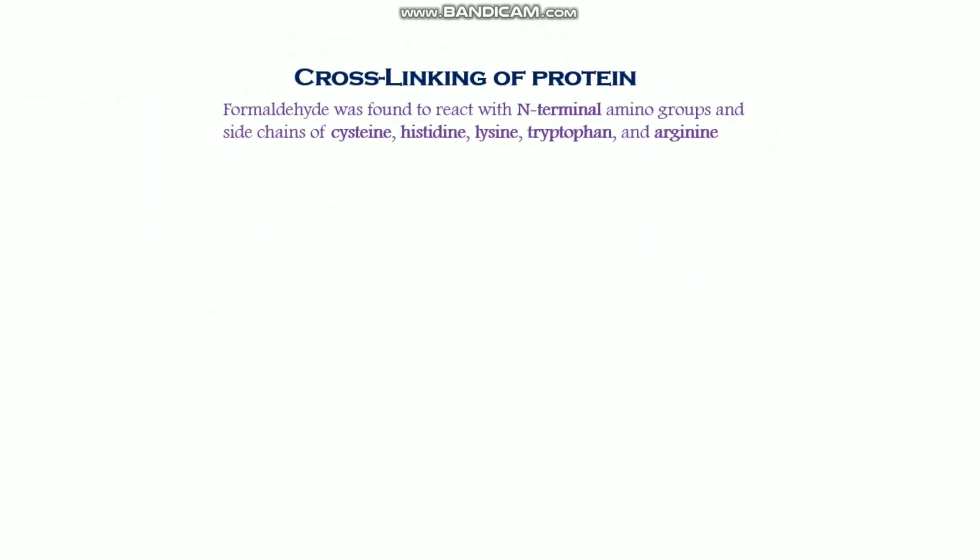Formaldehyde and paraformaldehyde have a very crucial function in the cross-linking of proteins. It has been reported that formaldehyde reacts with the N-terminal amino groups and side chains of cysteine, histidine, lysine, tryptophan, and arginine.